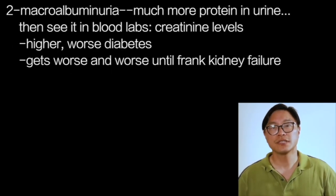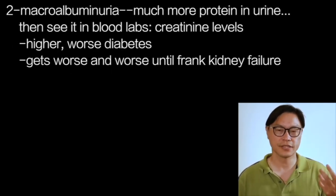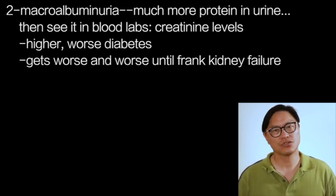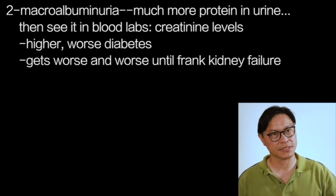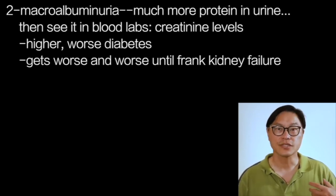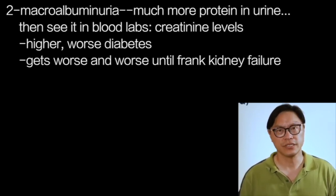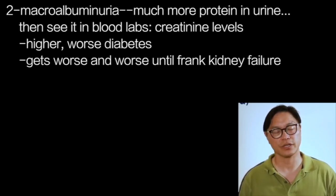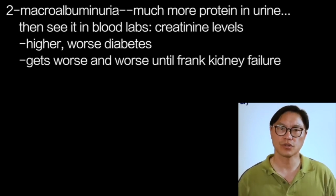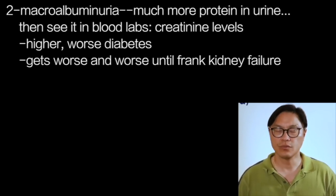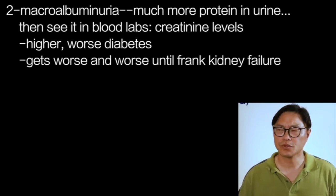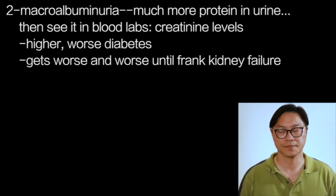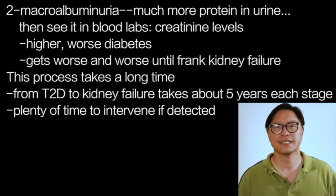After that, you start to see more and more protein in the urine. This stage is called macroalbuminuria or frank proteinuria, and the protein is at such a high level that it's detectable by dipstick. After that, you start to see it in the blood work, where you see an increase in a blood test called creatinine, which measures how well your kidneys are working. The higher it is, the worse your kidney disease, and it typically gets worse and worse over time with diabetes until you progress to frank kidney failure, which requires transplantation or dialysis.